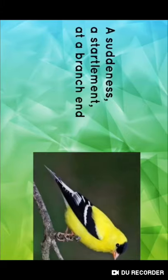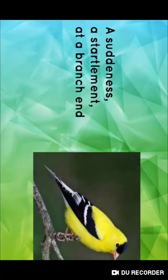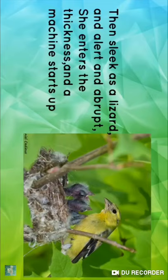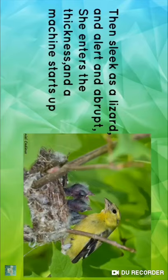A suddenness, a startlement at a branch end. Suddenness here refers to sudden movement; startlement means amazement at the branch end. Branch end के ऊपर एक sudden movement और amazement start हो जाती है. Then sleek as a lizard — यहाँ goldfinch को एक lizard से compare किया गया है. Sleek here refers to smooth. वो एक छिपकली की तरह alert और abrupt है. Repetition of 'a' four times here — alliteration is there. Abrupt means sudden or unexpected.